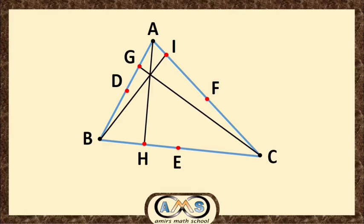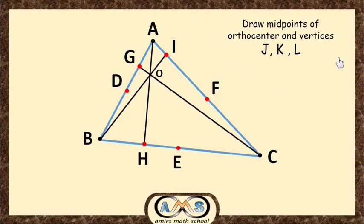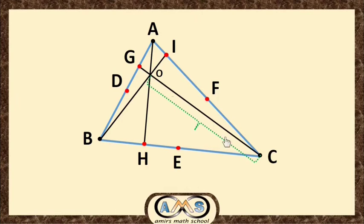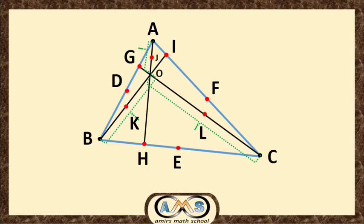The intersecting point of these three altitudes, O, is our orthocenter. Now draw the midpoints of the orthocenter and each vertex — which are J, K, and L. That is, the midpoint of OC is L, the midpoint of OB is K, and the midpoint of OA is J. So we now have nine points: three midpoints of sides, three feet of perpendiculars, and three midpoints of orthocenter to the vertices.